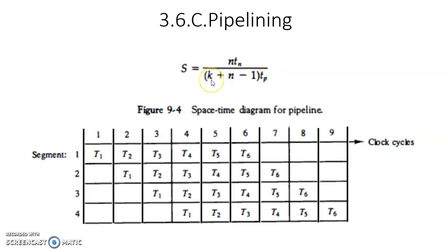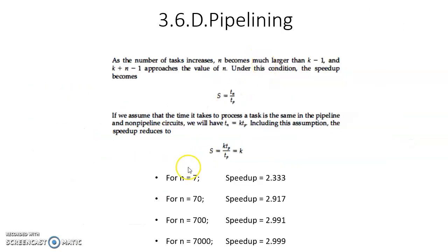21 is the numerator. And in the denominator, the formula is (k + n - 1) * tp, where k is the number of segments. Here the number of segments is 3 and n equals 7. So 3 + 7 = 10, minus 1, that is 9. And tp is the time taken in a single segment, that is equal to 1. So 21 / 9, and that is equal to 2.33. For n equal to 7, the speedup obtained with the help of this pipeline technique is 2.33.